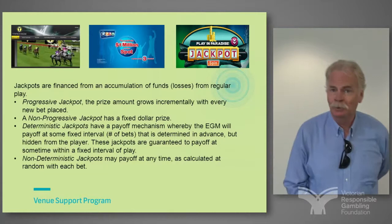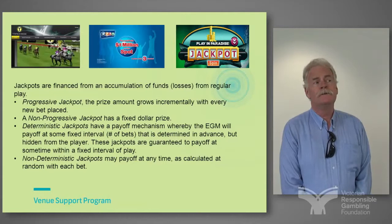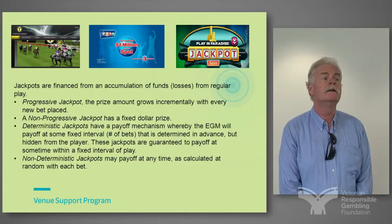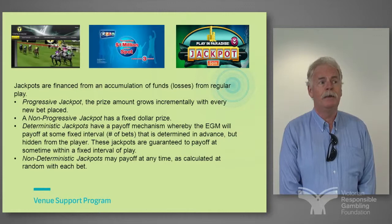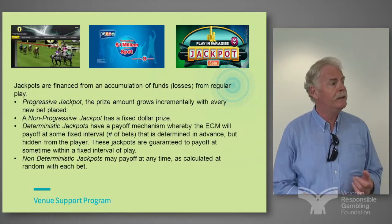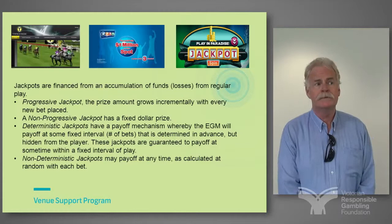Jackpots are an interesting tool used by the industry — great fun to win obviously, but there are different sorts of jackpots. There's a progressive jackpot where the prize grows incrementally with every new bet placed. A non-progressive which has a fixed dollar prize. A deterministic jackpot has a payoff mechanism whereby the EGM will pay off at some interval of bets — not at a dollar interval and not at a time interval, just the number of bets that have been placed.